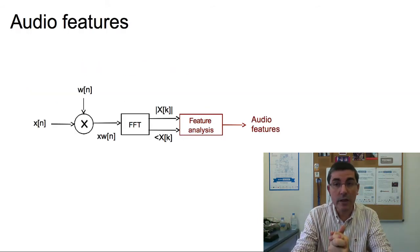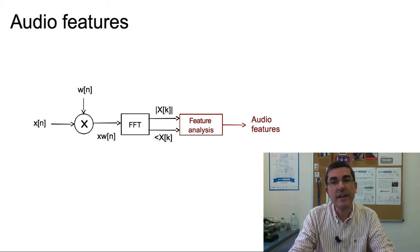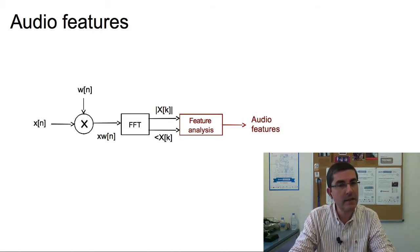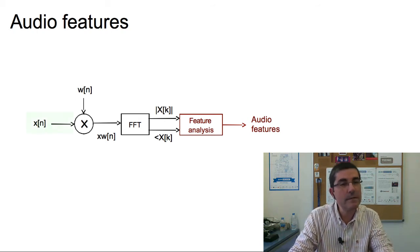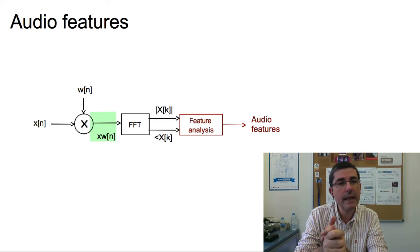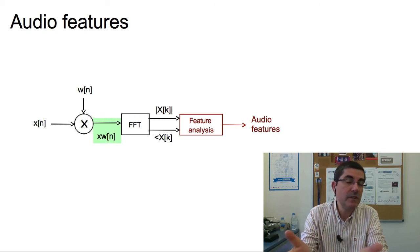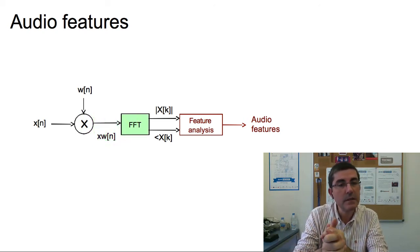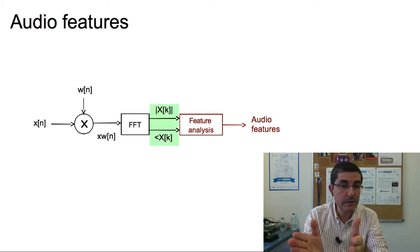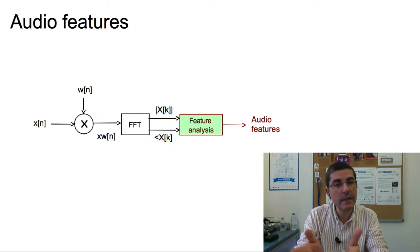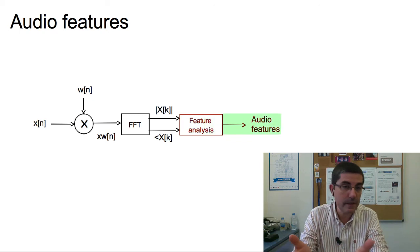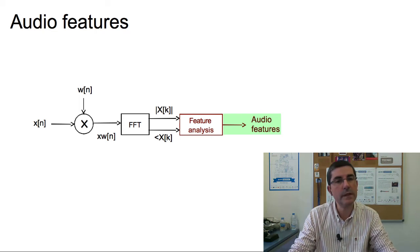This is a generic block diagram of the extraction process of audio features based on spectral analysis, which we have seen before. We start from our signal x, then we window a portion of it with a window, and then we compute the spectrum using the fast Fourier transform, resulting in the magnitude and phase spectrum. From here we extract relevant features of the audio signal — features that are of relevance to a particular application.